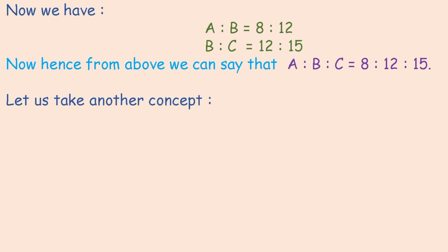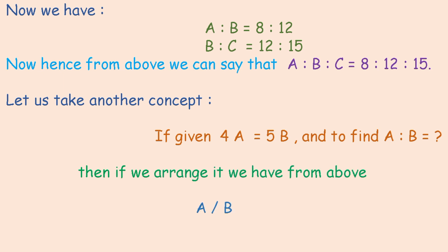Let us take another concept. If given 4A equal to 5B, and to find A ratio B, then if we arrange it, we have A upon B is equal to 5 upon 4, and hence A ratio B is 5 ratio 4.